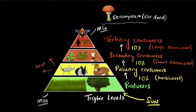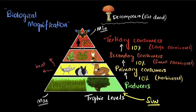Producers get their energy directly from the sun, so it's easy to obtain, and that's why you have the maximum number of producers. There's one more thing to consider when thinking about trophic levels: biological magnification. As we go to the top of the food chain, the concentration of harmful substances like pesticides increases. Pesticides are sprayed directly onto producers; primary consumers eat those producers and accumulate the pesticides. Since primary consumers can also eat multiple producers, they may get even more pesticides.